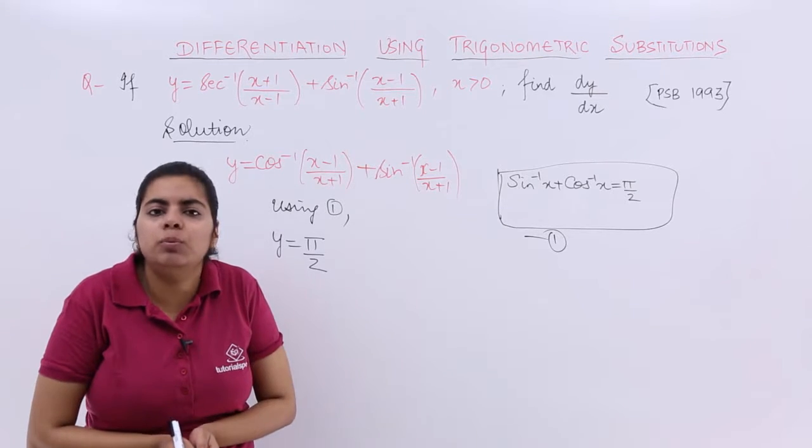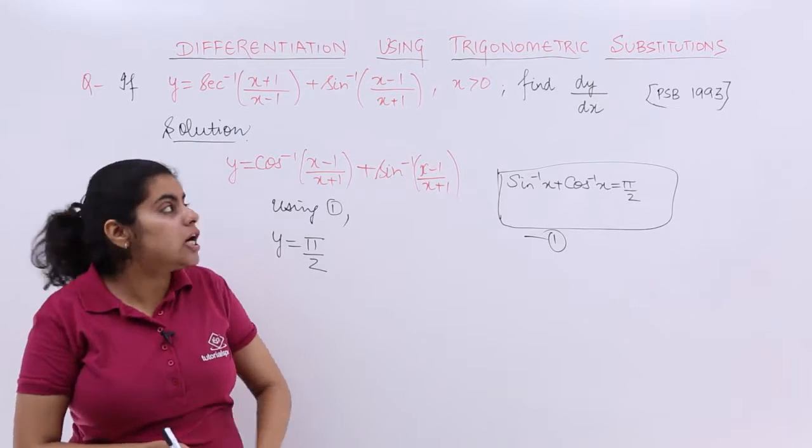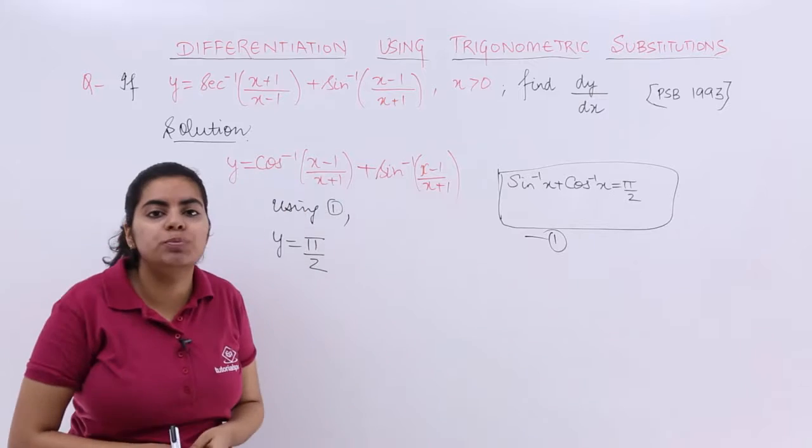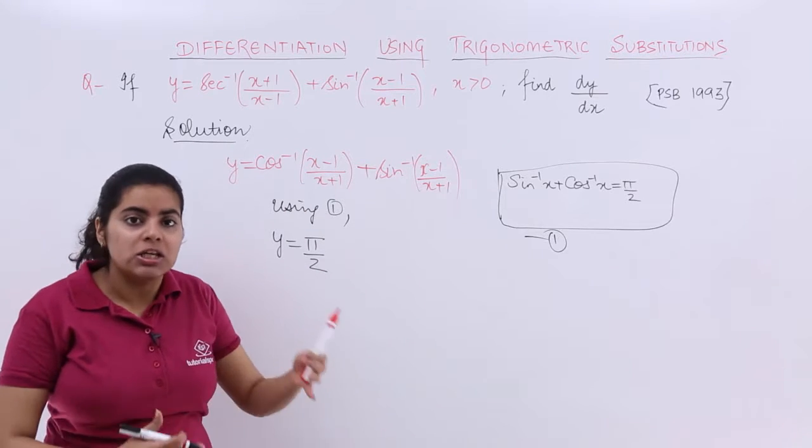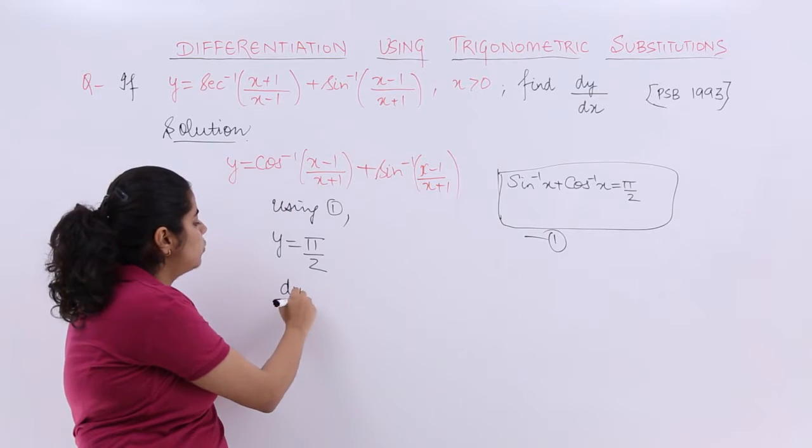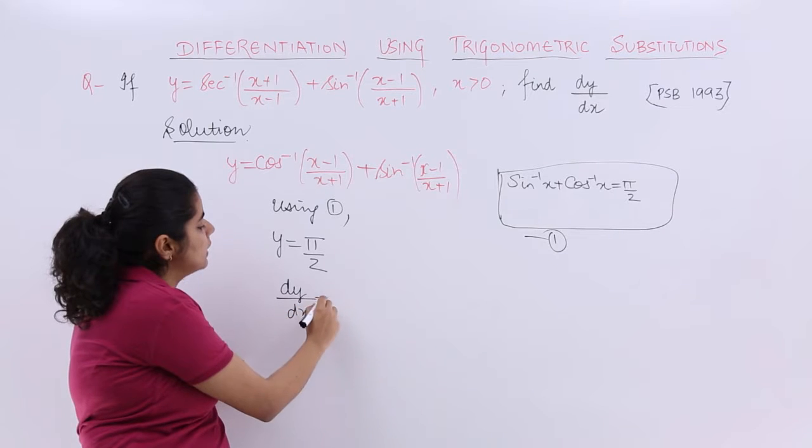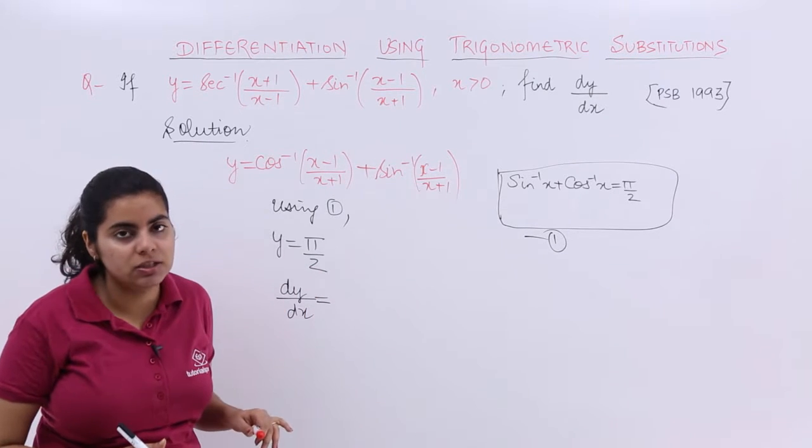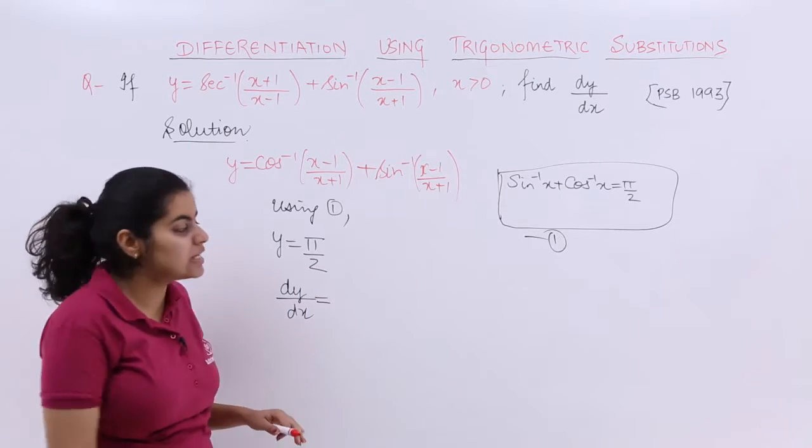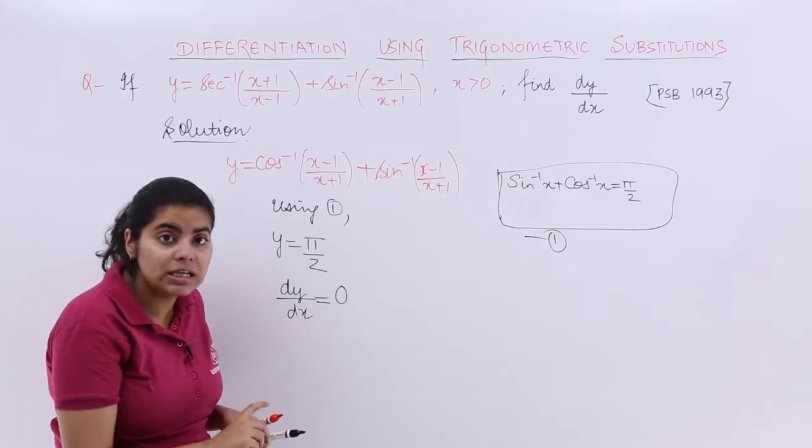But, is that what needed to be found out? No, because dy/dx was needed to be found out, not y only. So now let's differentiate it with respect to x. What is dy/dx? Pi/2 being a constant, its differentiation with respect to x is 0. So the answer is 0.